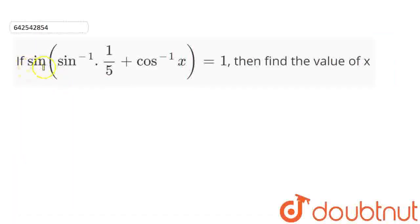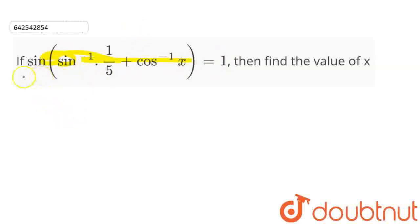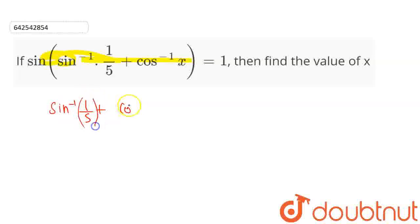Now, if sin of sin inverse 1 by 5 plus cos inverse of x is equal to 1, then we have to find the value for x. So, let us take sin inverse of both sides, so this will be sin inverse of 1 by 5 plus cos inverse of x.